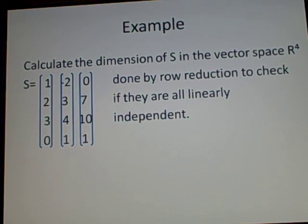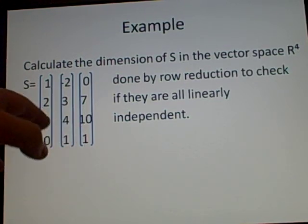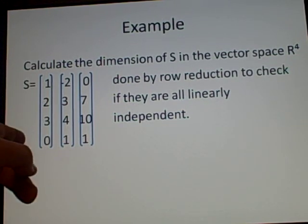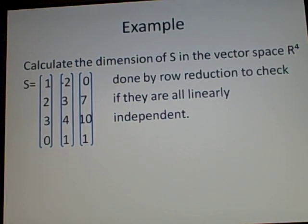First, we need to check if they're linearly independent—if one can be written as a multiple of the others. This tells us the dimension. At the moment it's three, but it might not be, so we'll row reduce it.